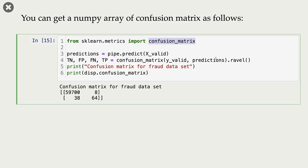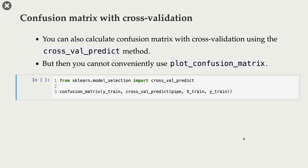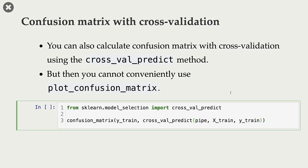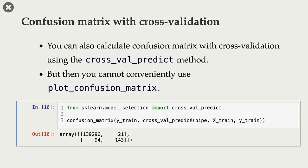You can also calculate confusion matrix with cross-validation using this function called cross_val_predict. Remember that when you carry out cross-validation, each example in your data gets to be in the validation set. So when you use this cross_val_predict, what happens is that it notes for each example when it's in the validation set, whether it's a true positive, true negative, false positive, or false negative. And then it creates this confusion matrix from all examples. In our case, we are passing our X_train and y_train, and it will give us this confusion matrix.